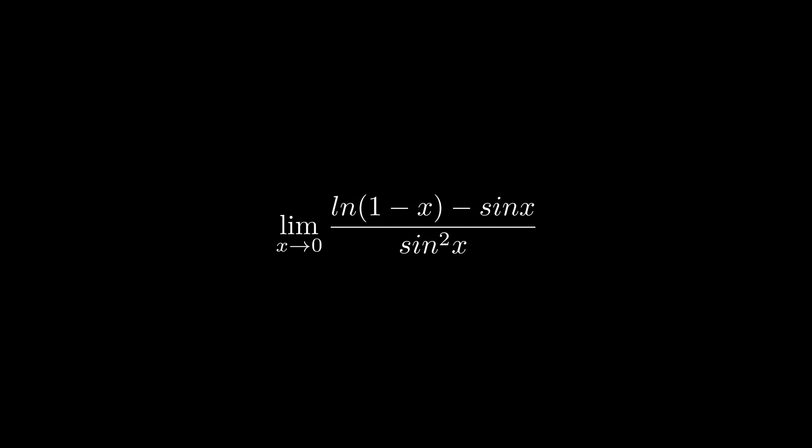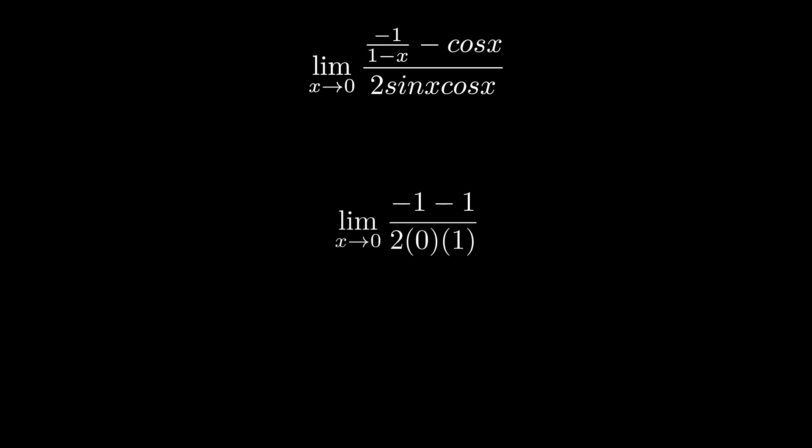So, we can rewrite the limit as the following expression. If we evaluate the limit, we can get the limit as x approaches 0 is equal to negative 2 over 0. Now, negative 2 over 0 is undefined, but we can actually take one-sided limits to solve this problem.